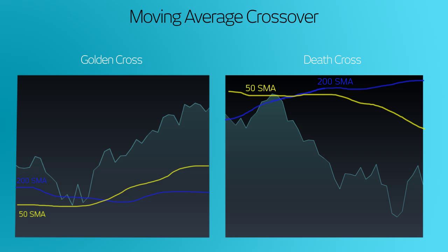Using moving averages in conjunction with some of the other indicators such as the RSI, support, resistance, and trend lines can really help your trading. And while not all trades will be successful, it can give you a better edge on the market.